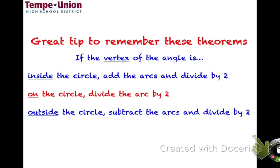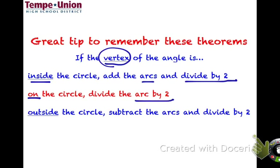Here's the key tip to remember all these theorems: if the vertex of the angle is inside the circle, add the arcs and divide by two. If the vertex is on the circle, just divide the intercepted arc by two. If the vertex is outside the circle, subtract the arcs and divide by two. Inside — add. On — divide. Outside — subtract.